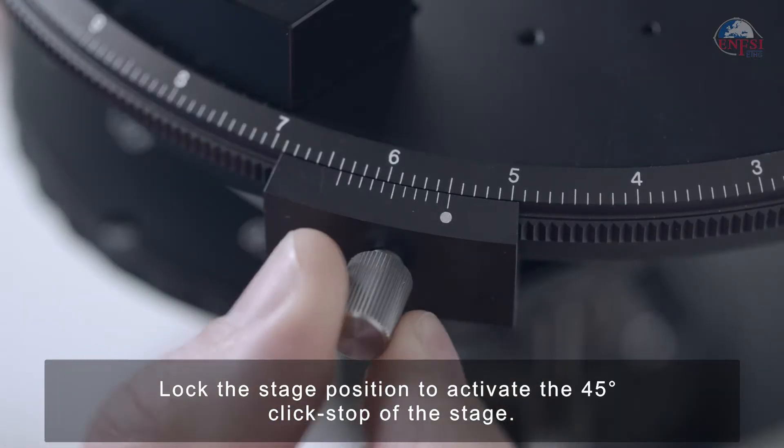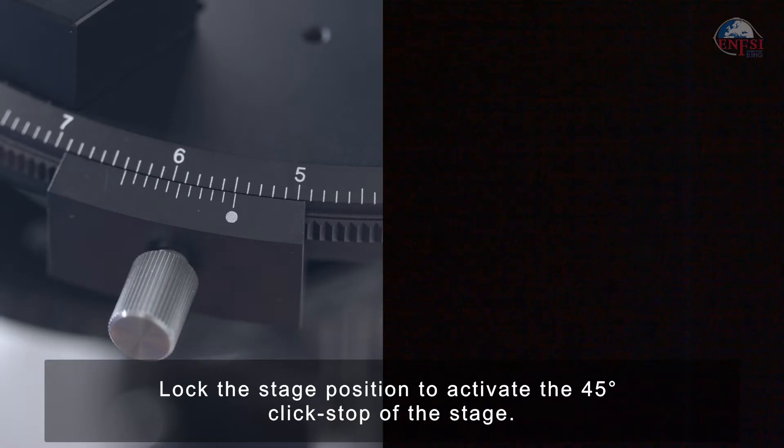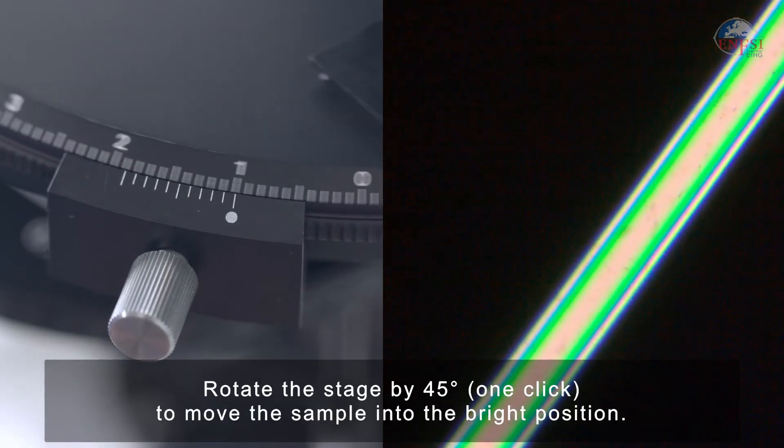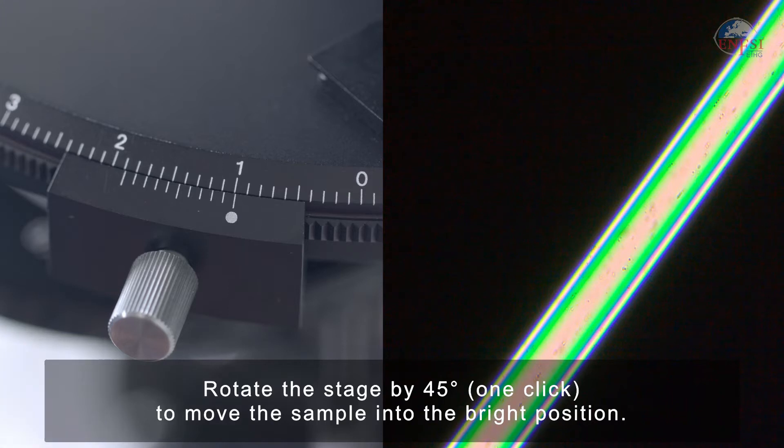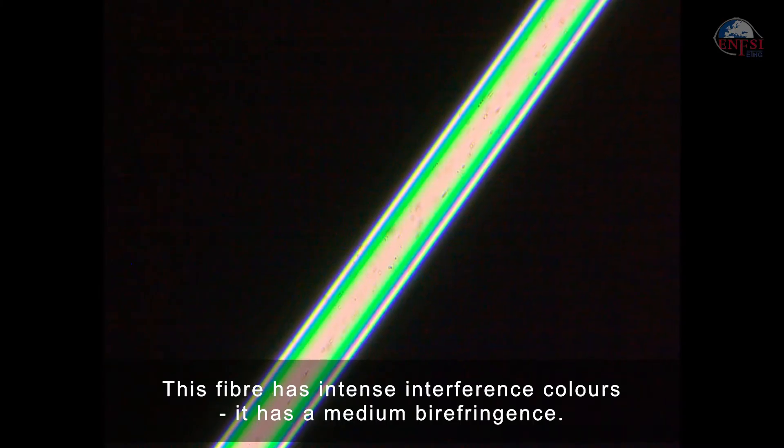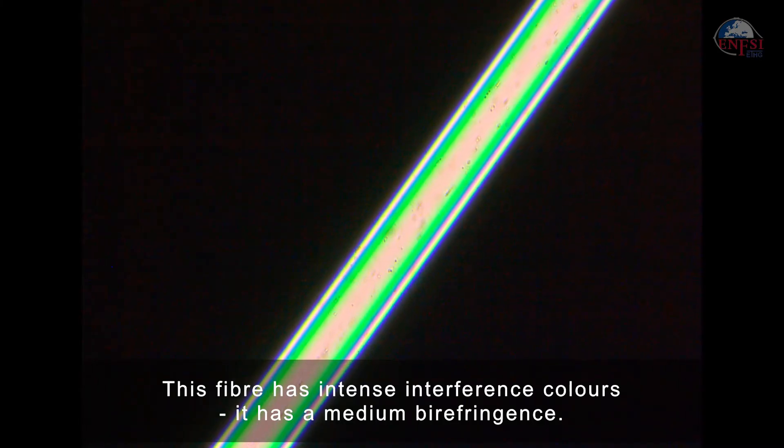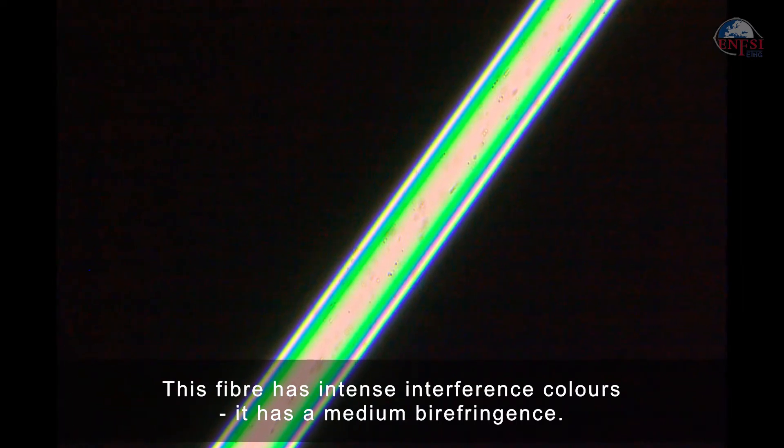Lock the stage position to activate the 45-degree click-stop of the stage and rotate the stage by 45 degrees one click to move the sample into the bright position. This fiber has intense interference colors. Hence, it has a medium birefringence.